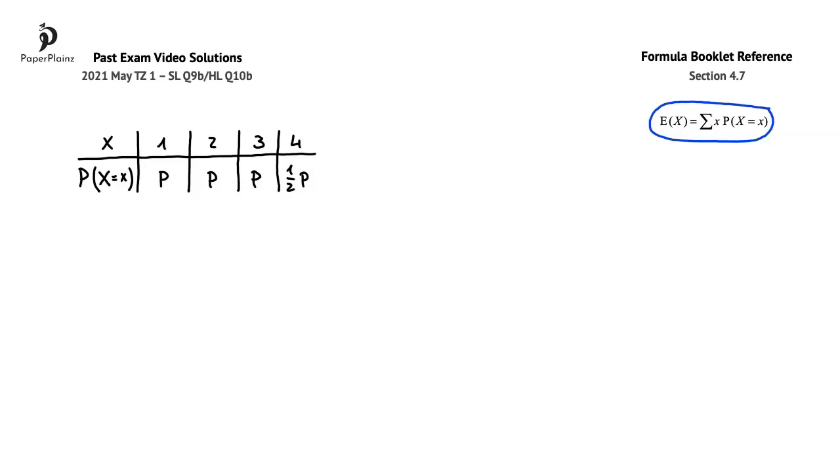This formula shows us that to find the expected value, we have to multiply each x value by the corresponding probability, and then add up these products.